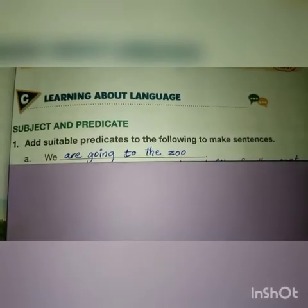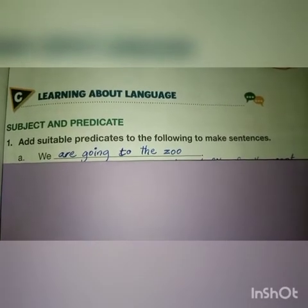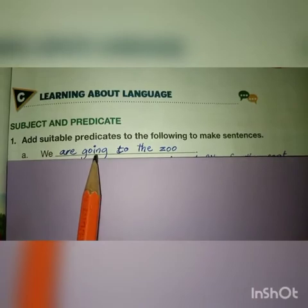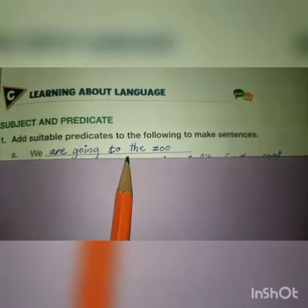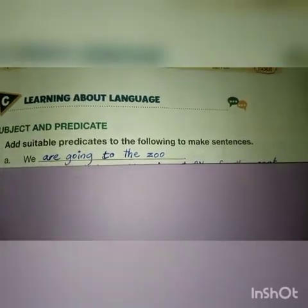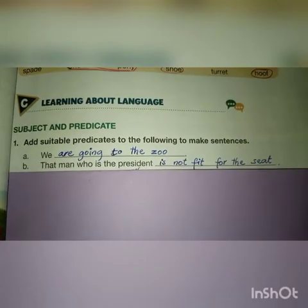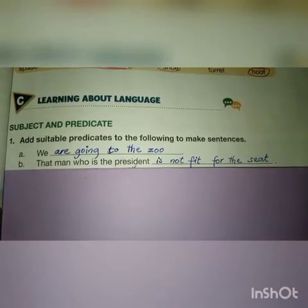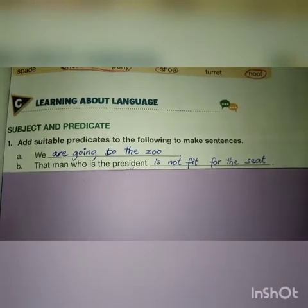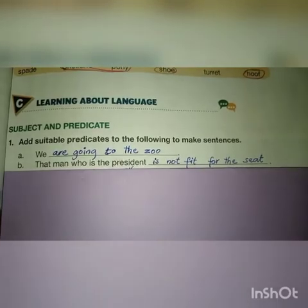Here we have 'we' as a subject — 'we' meaning 'hum' — and the predicate I've added is 'are going to the zoo.' This predicate has an action word and the rest of the words that follow it, forming a complete sentence: 'We are going to the zoo.' For 'that man who is the president,' the predicate is 'is not fit for the seat' — meaning he is not suitable for that position.